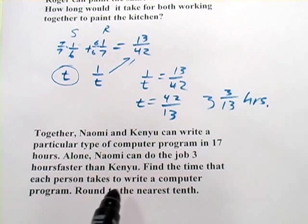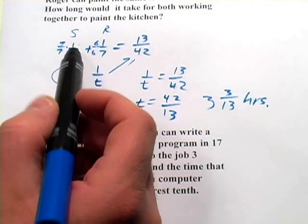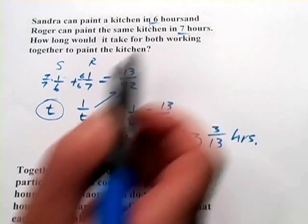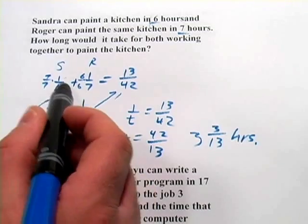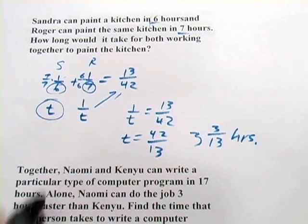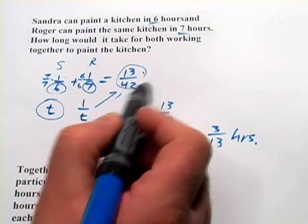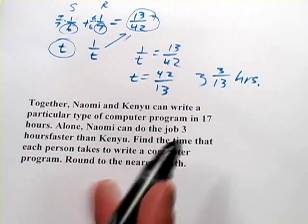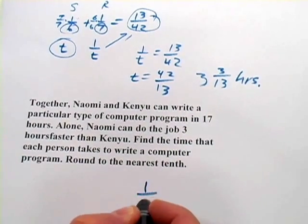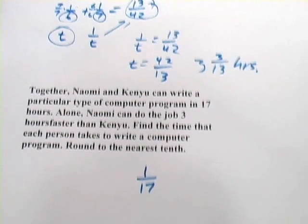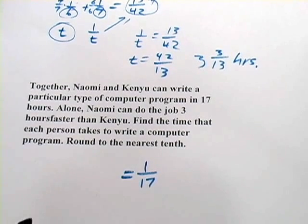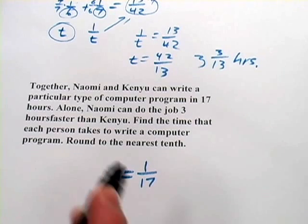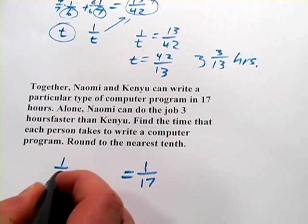And we want to find the time that each of them takes. So we're really looking for the hours that it takes them to do the job. And we have this, basically. It takes them seventeen hours working together, so the hourly rate of them working together is one-seventeenth of the job. Now, I want to have Naomi's rate and Kenyu's rate here. Let's call Kenyu's rate one over K.